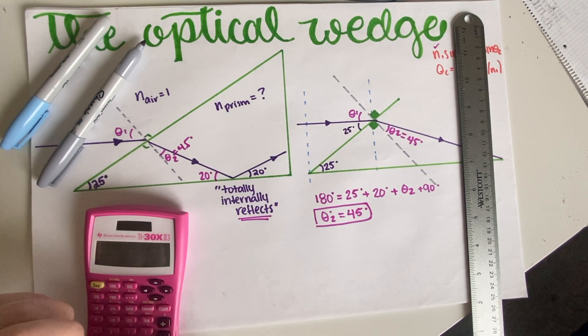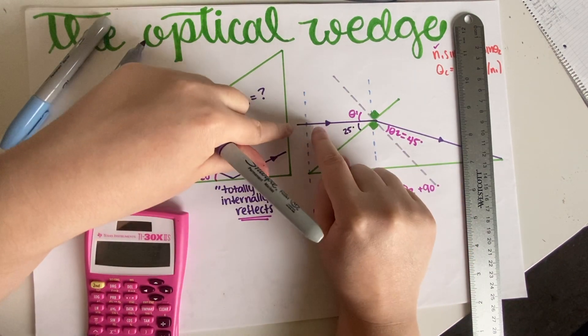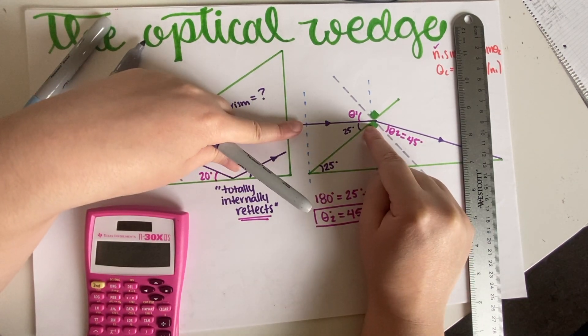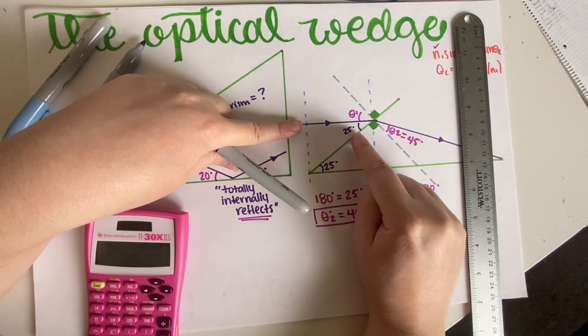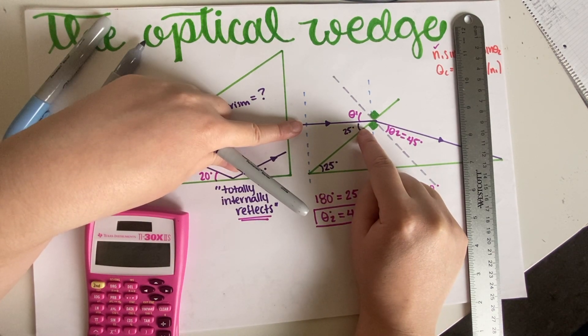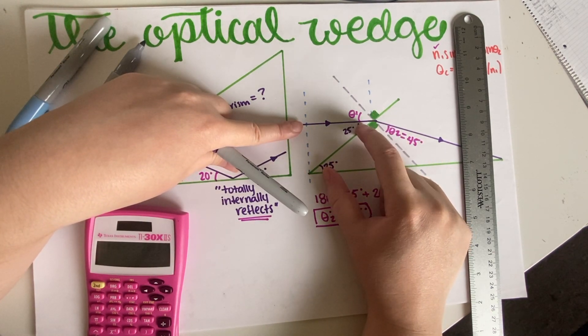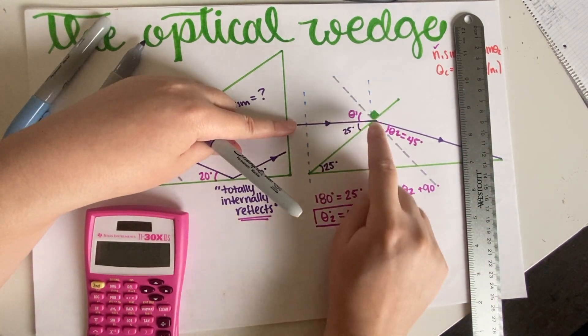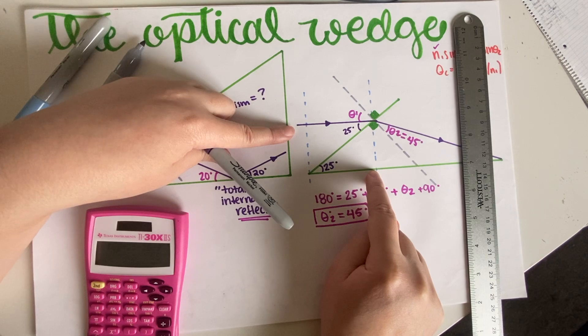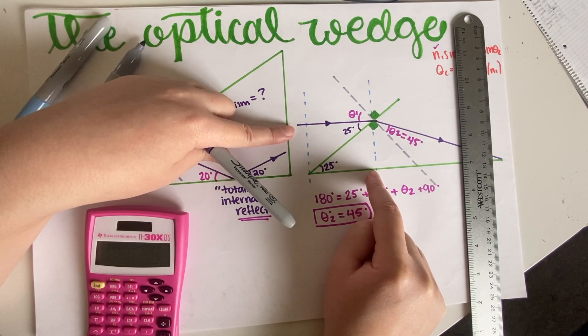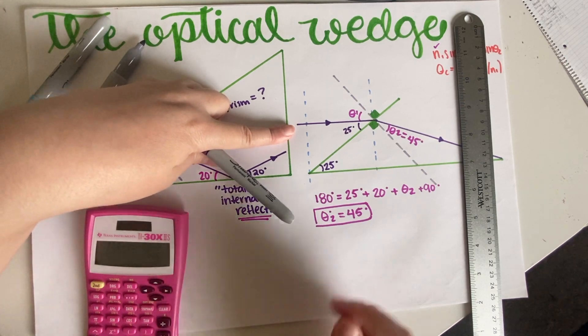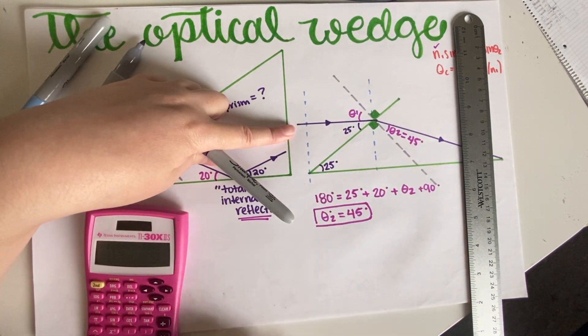Because again, I am making an imaginary rectangle over here which makes two triangles. So if this is 25, then this has to be 25, just by using this symmetry and the fact that these two lines—the one with the incident ray and the one with the prism over here—are perfectly parallel to each other. So that's the reason why I can very easily claim that this has to be 25 degrees.